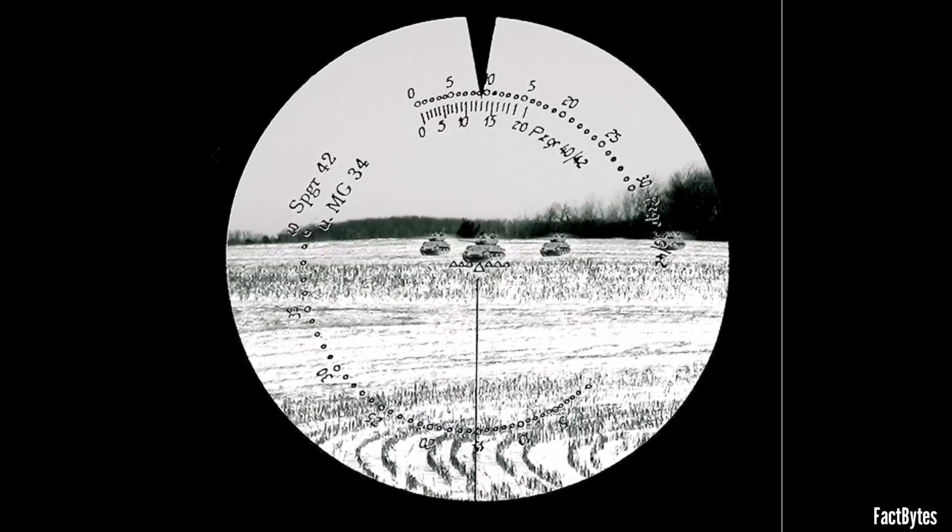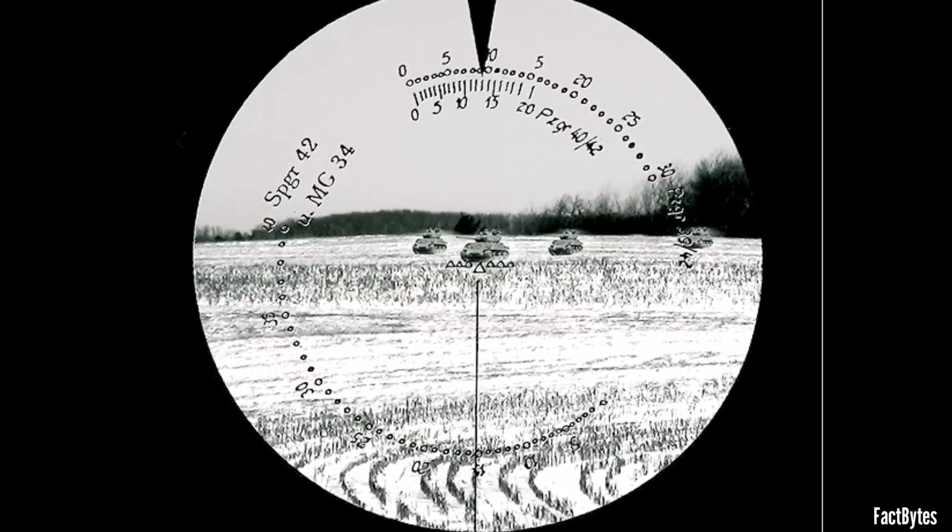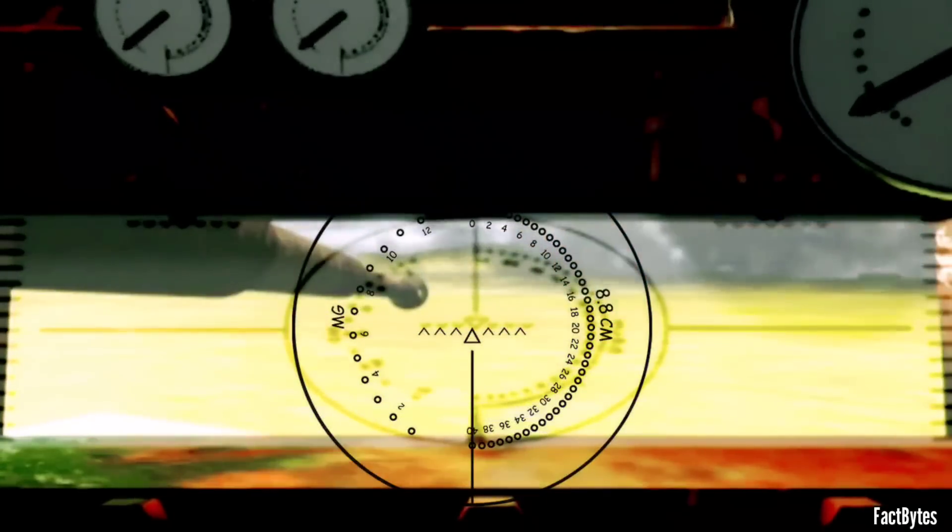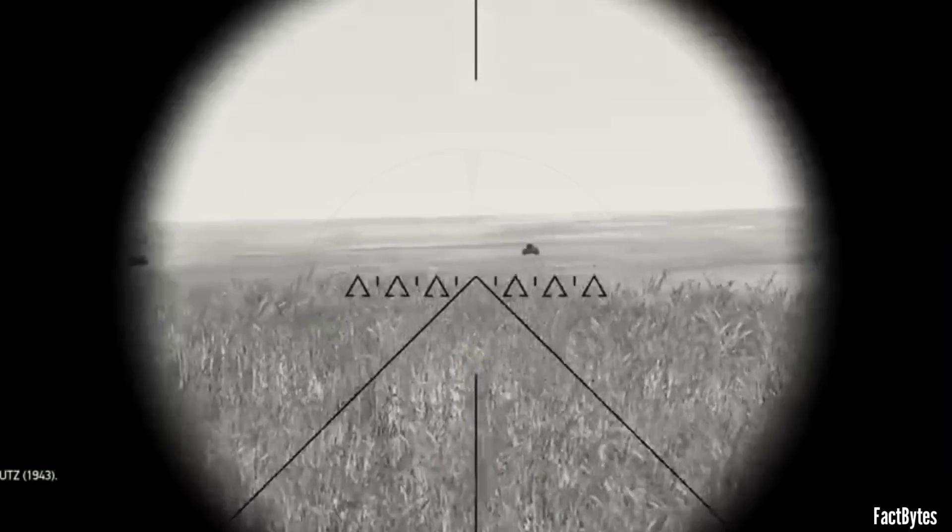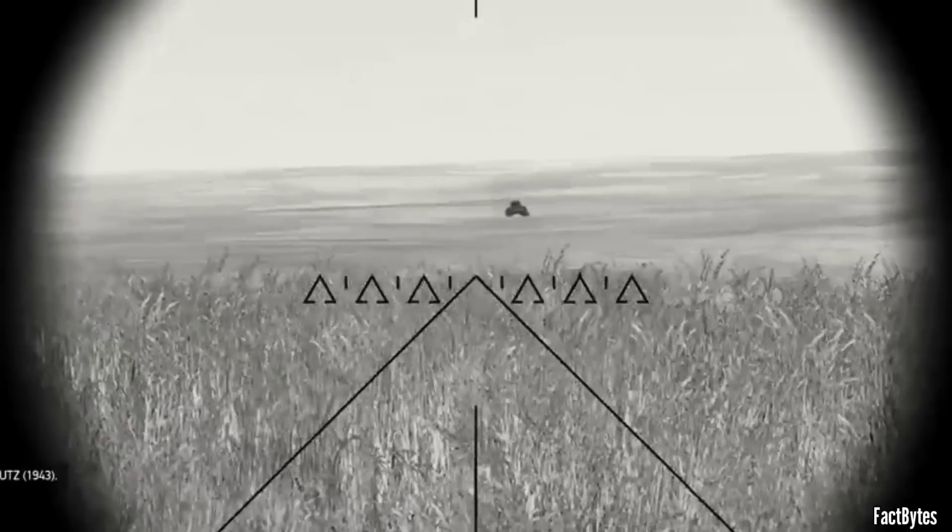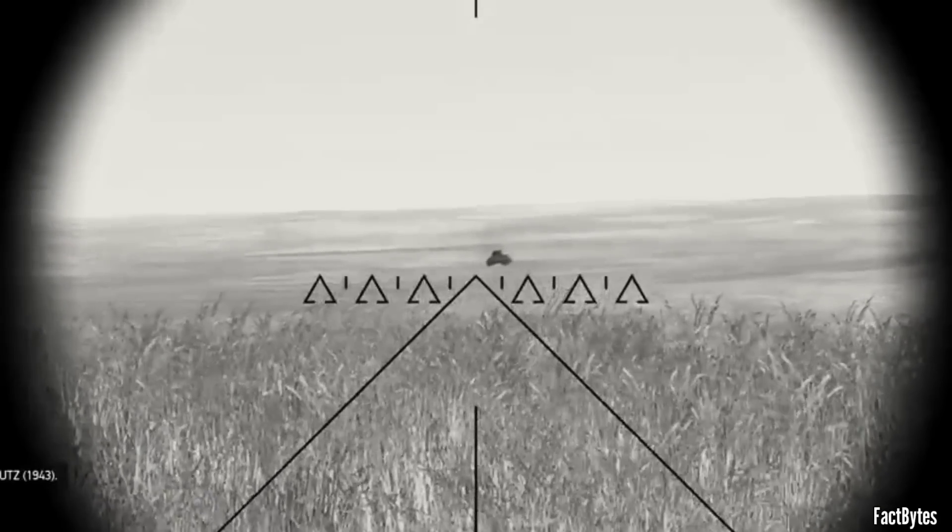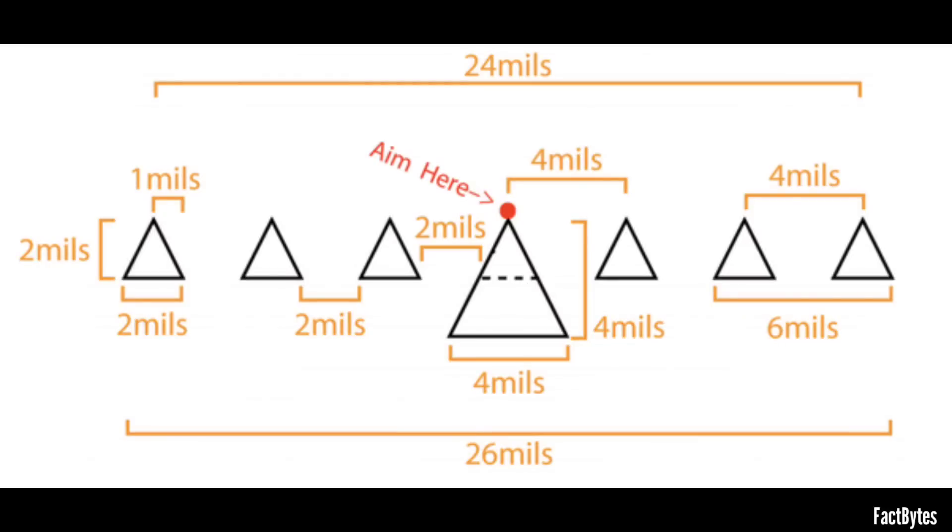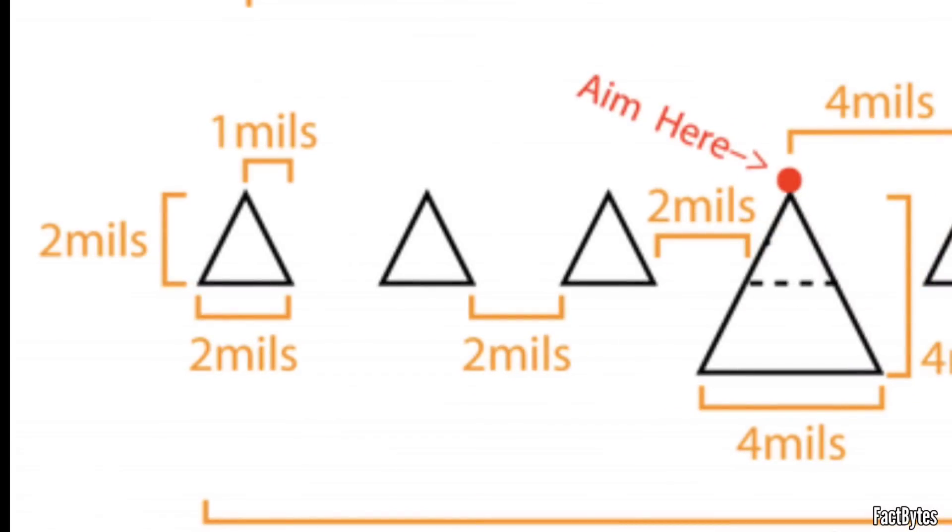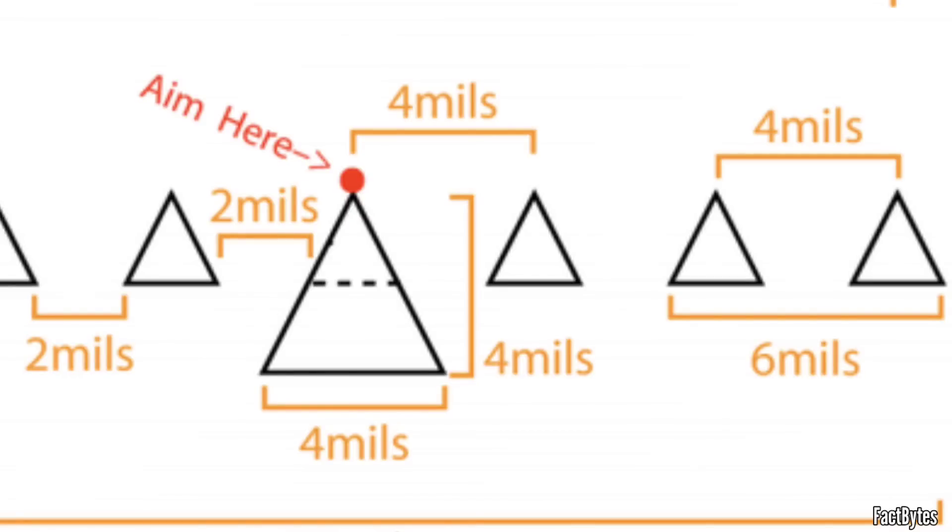One for armor-piercing ammunition, one for high-explosive ammunition, and one for the coaxial machine gun. The reticle also features seven triangles, which are utilized for range finding. There are six small triangles and one large triangle. Their measurements are as follows: The numbers represent the lengths of the heights and bottom sides of the triangles, measured in milliradians or mils, which is one thousandth of a radian. Each small triangle measures two mils in height and bottom side. The large triangle measures four mils in height and bottom side, making it twice as large as a small triangle.